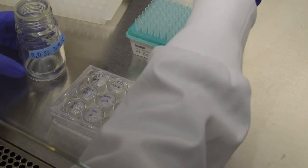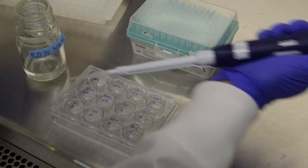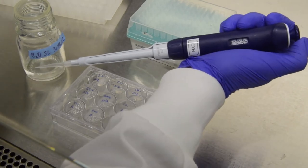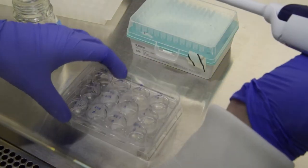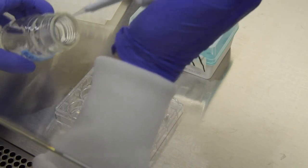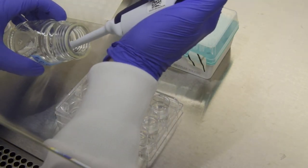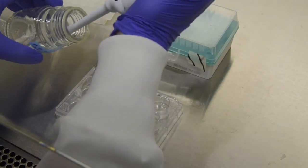Now it's time to set up the co-cultures. I first add water to any wells needed as a no agrobacterium control. I used 50 microliters of each liquid or suspension for these steps. I will then add the agrobacterium followed by the yeast.